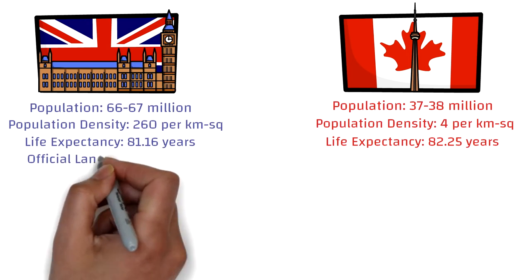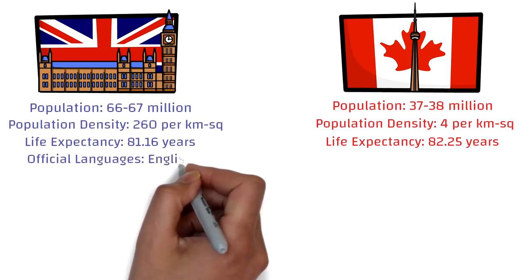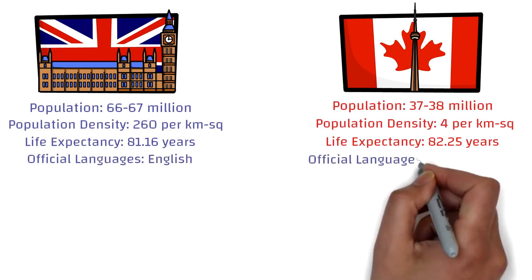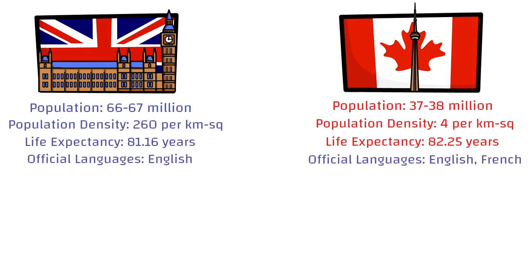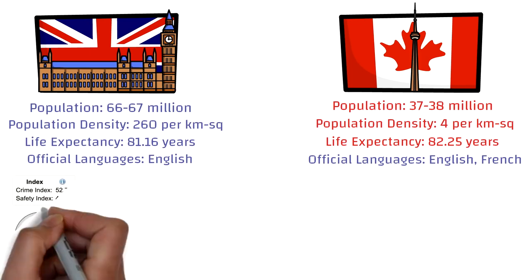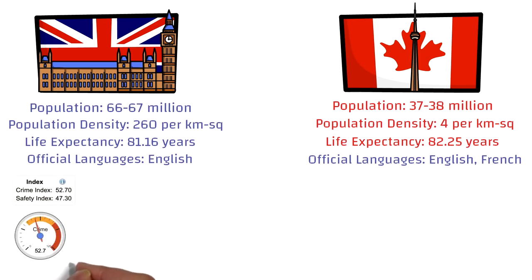Both countries have immigrants coming in from many parts of the world, so many other languages are spoken in addition to the official ones. Regarding crime and safety: for London the crime index is 52, for Manchester it's 56, and for Edinburgh it's around 30 — making Edinburgh the safest of the three UK cities.